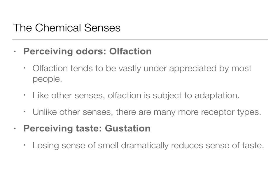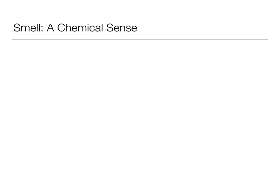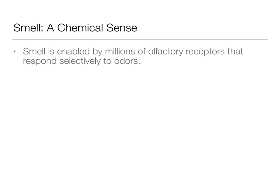Smell is that olfaction, that chemical sense. It's enabled by millions of different olfactory receptors that respond selectively to odors. It's kind of a key-and-lock system where we have a particular smell and it only fits a particular olfactory receptor. So if you're trying to smell vanilla with an ammonia olfactory receptor, you're not going to be able to do that. That vanilla smell only goes through that specific vanilla olfactory receptor — you have millions and millions of kinds of these that allow you to respond to different odors.